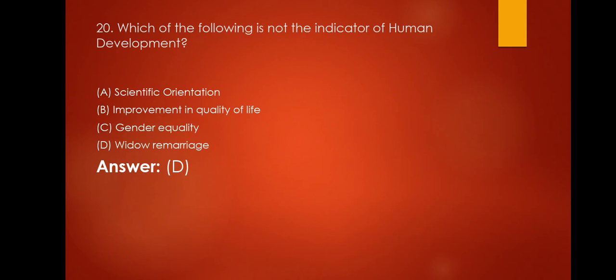Which of the following is not the indicator of human development? Option A: Scientific orientation. Option B: Improvement in quality of life. Option C: Gender equality. Option D: Widow remarriage. The correct answer is Option D. That is Widow remarriage.